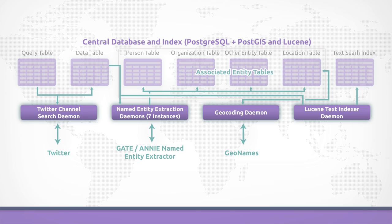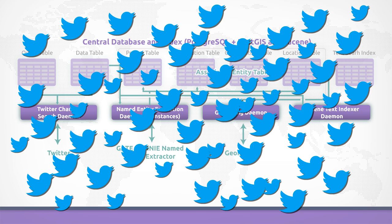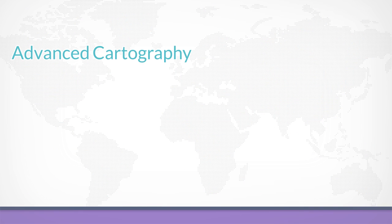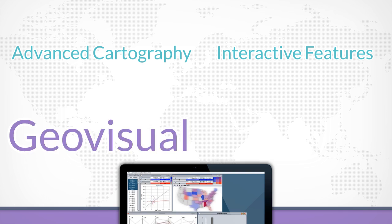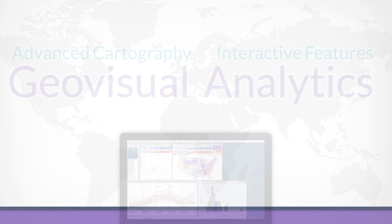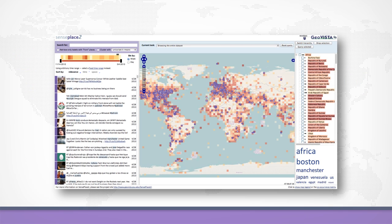When this is done for hundreds of millions of tweets, there's simply too much information to take in all at once. This is where advanced cartography and interactive features — the key elements of geovisual analytics — come into play. Let's take a look at SensePlace2 in action to see how this works.